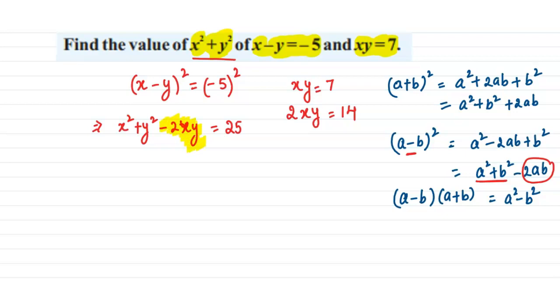So we are going to substitute it. We get x² + y² - 14 = 25. Now we can easily figure out the value of x² + y² which will be equal to 25 + 14 = 39. So x² + y² = 39. I hope it is clear, thanks for watching, goodbye.